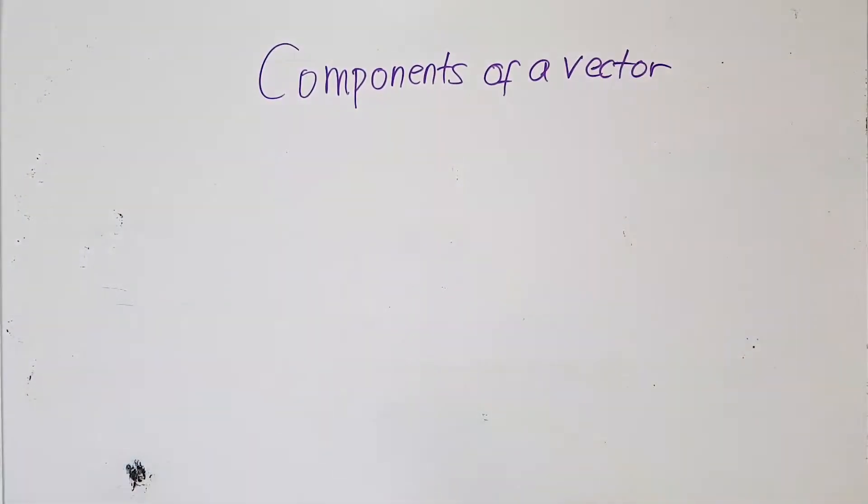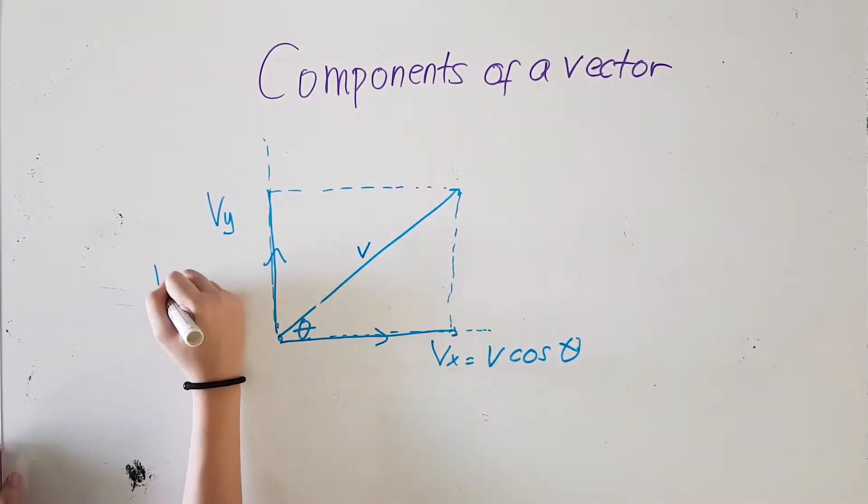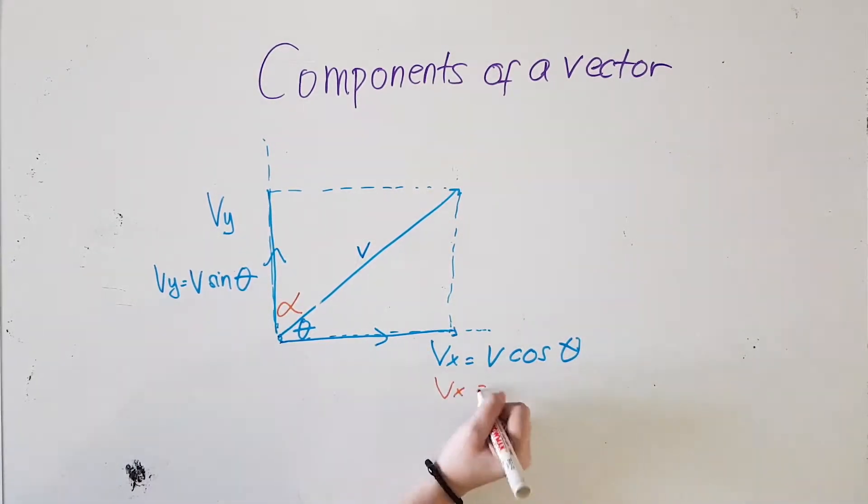There are two components of vector. To find the component of any vector, you first need to find the angle between the vector and the direction of interest, and then multiply the vector by the cosine of the angle theta.